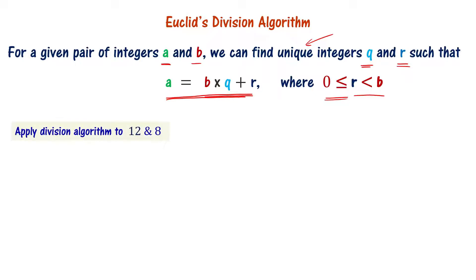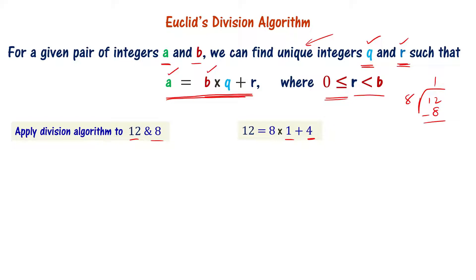Let's apply the division algorithm to these two numbers, 12 and 8. For 12 and 8, we can find q and r. We get q equals 1 and r equals 4. 12 divided by 8 gives 1 times 8, then subtract 8 from 12 and you get 4. So q is 1 and r is 4.